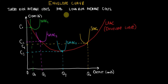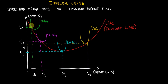In this video I would like to put together everything that we have discussed about the short run and the long run costs. I will explain the relationship between short run average costs and the long run average cost. The long run average cost is also called the envelope curve, which is the essence of this video and is extremely important in microeconomics. So let's start.